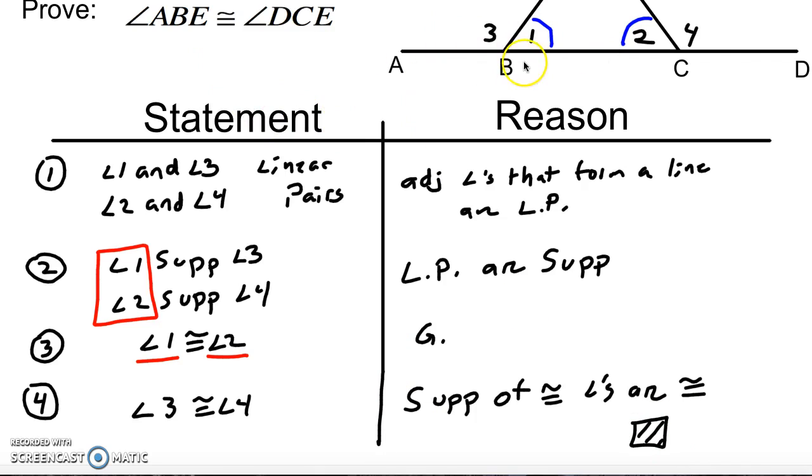When you're working with linear pairs, it's very simple. You're going to look for a pair of angles that are congruent. If those two angles both have a pair of supplements, so one and three are supplementary here, two and four supplementary over here, then we can use this supplements of congruent angles are congruent.